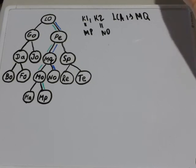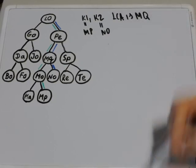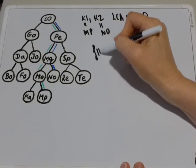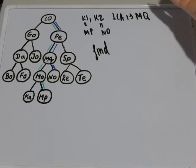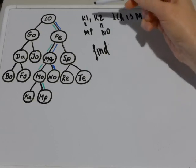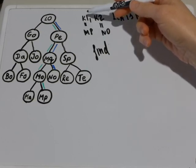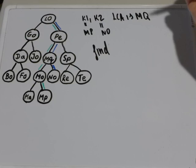We're going to use the same trick as we used in the function that is called find function except we're going to pass two nodes to this kind of function. We're going to pass both K1 and K2 to this function.